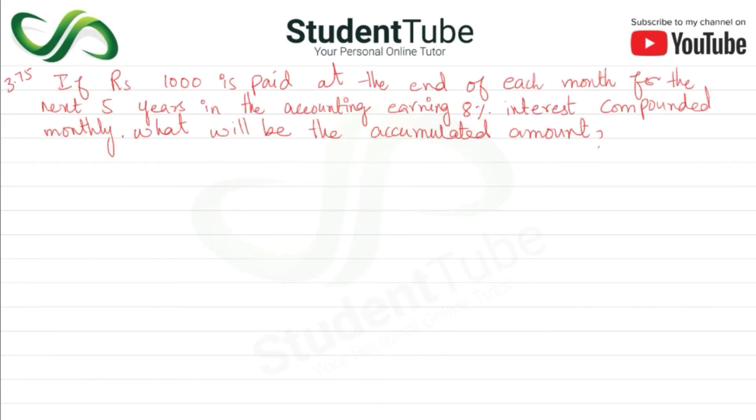Question 3.75: If rupees 1000 is paid at the end of each month for the next 5 years in the account earning 8% interest compounded monthly, what will be the accumulated amount?